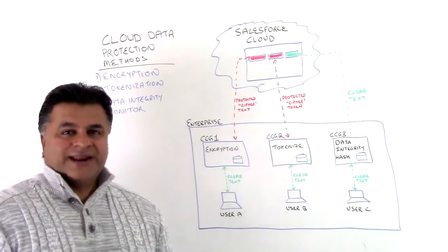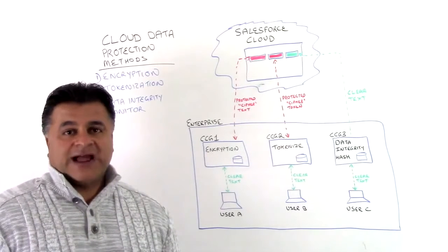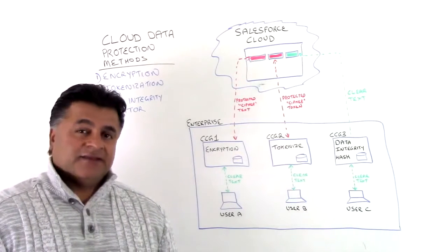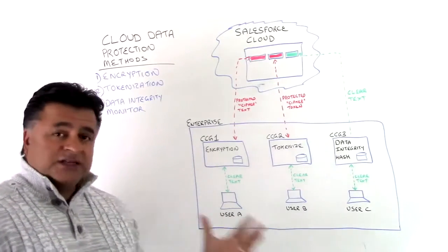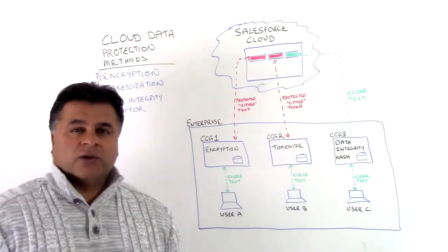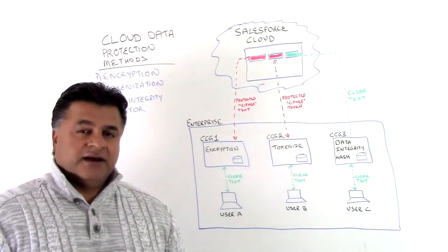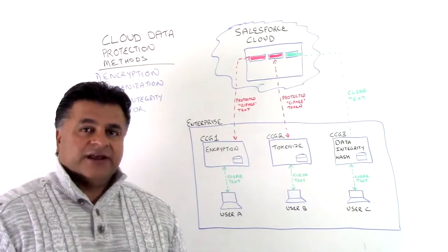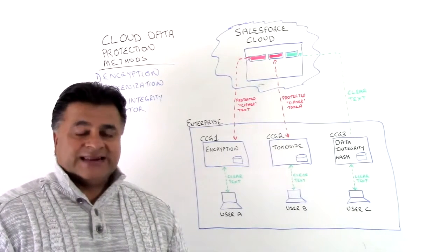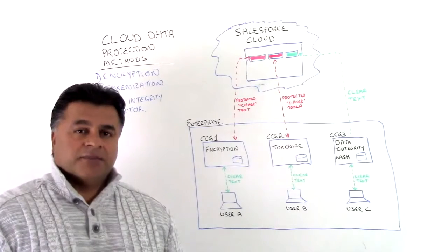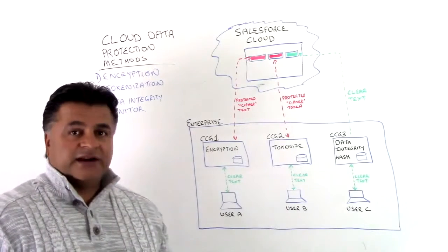In summary, these three data protection methods — encryption, tokenization, and data integrity monitoring — give you a diverse way to protect your data and track who is modifying it in the cloud. Customers, based upon their use cases, will use a combination of one, two, or possibly all three, depending upon their requirements. These are the essential building blocks for starting your data protection policy. As you lay that foundation, you can then look into additional layers of security such as anti-virus, anti-malware, and data loss prevention, which complement the base level of encryption, tokenization, and data integrity monitoring.